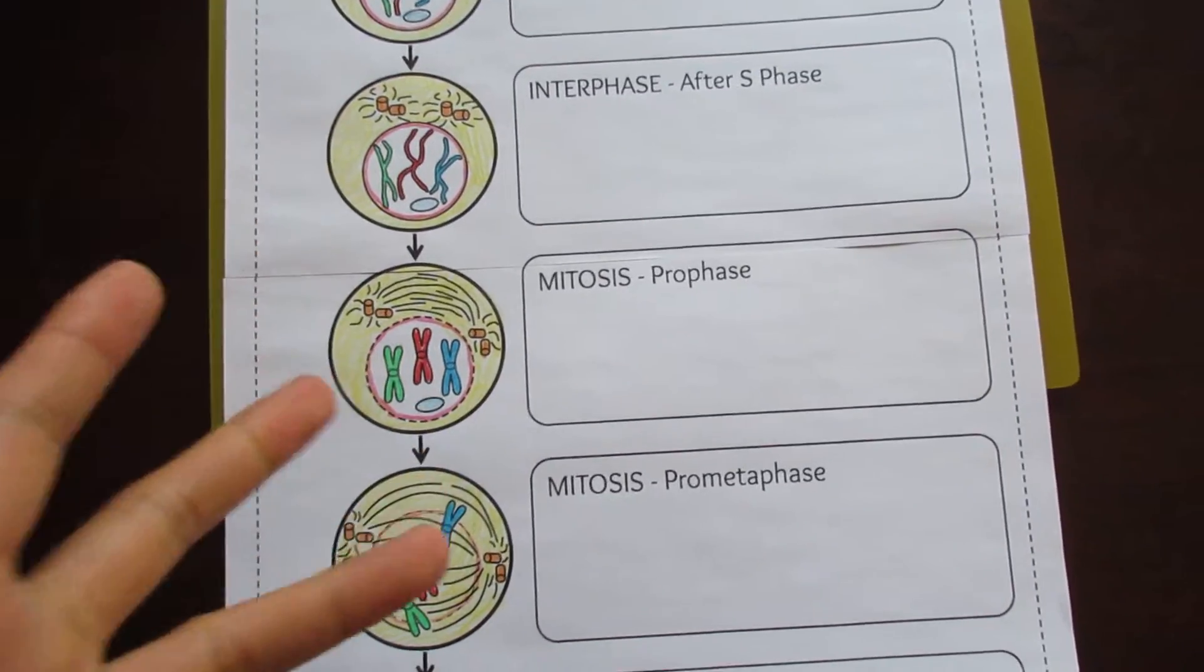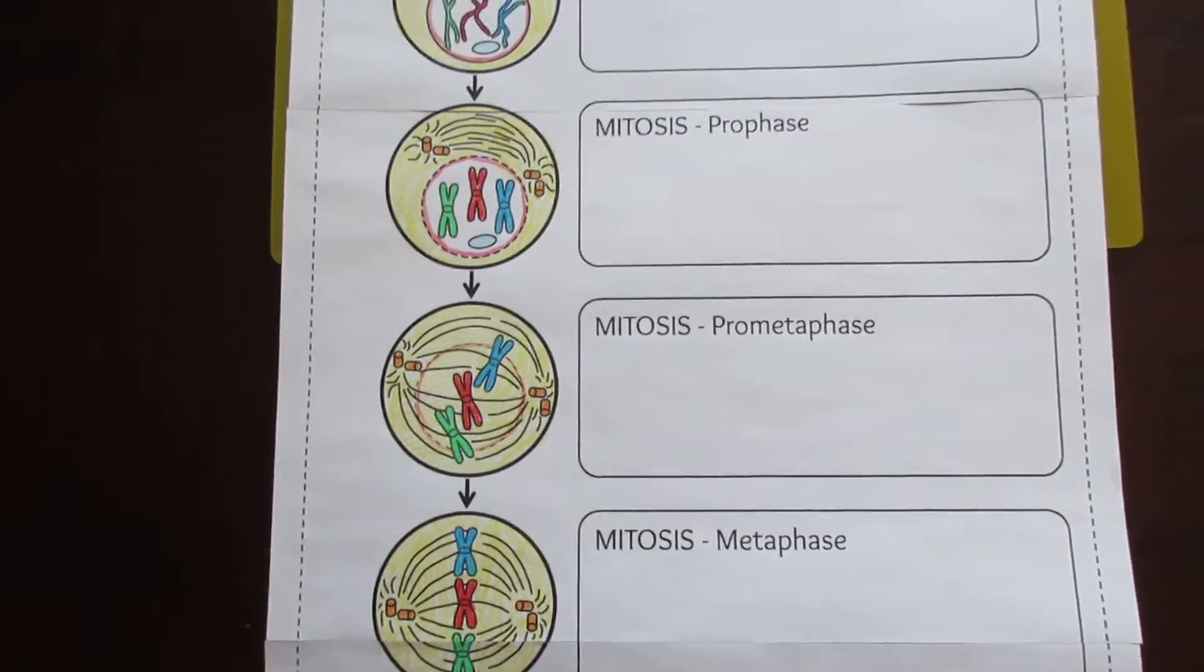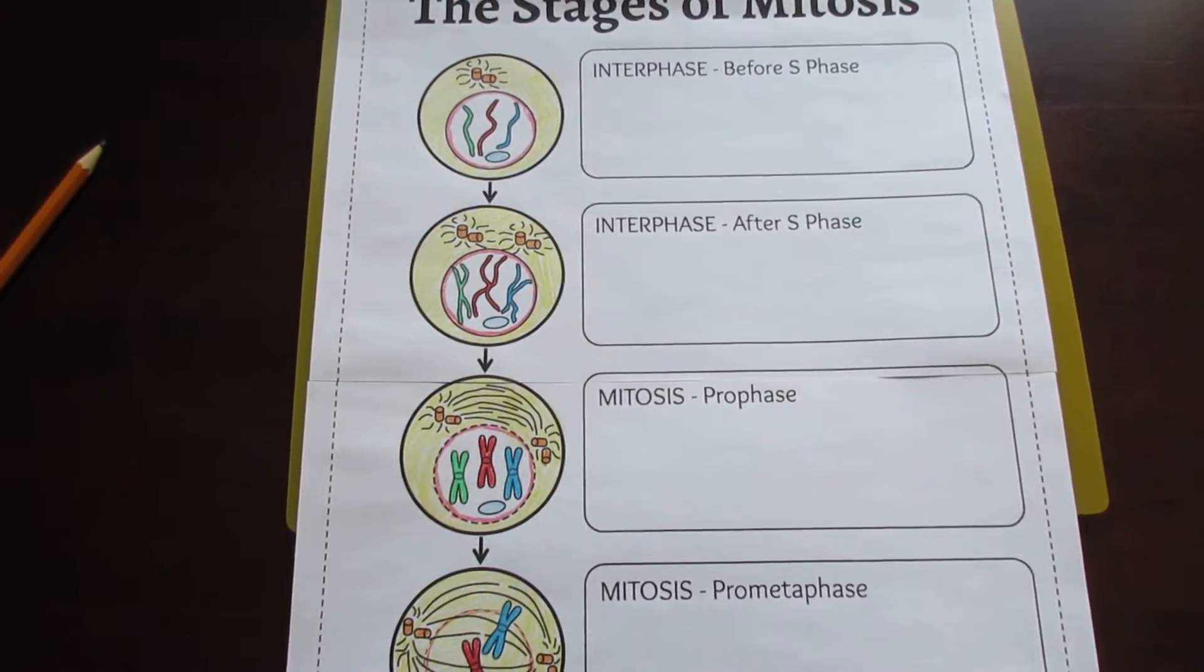prophase, metaphase, anaphase, and telophase, without the interphase and without the prometaphase. So depending on the level of your class, you can choose to use whichever foldable option you like.